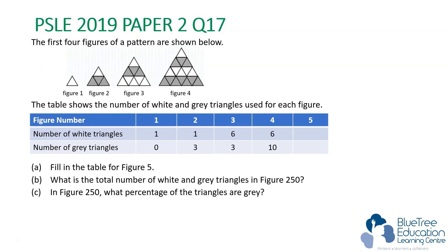For Part A, many students will be able to do this part. We simply need to continue to draw triangles. For figure 5, we just need to continue to draw 1, 2, 3, 4, 5, 6, 7, 8, and 9 more white triangles. We can find the number of white triangles to be 15. And we notice the number of gray triangles remains the same, which is 10. That's it for Part A.